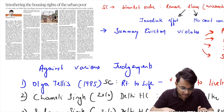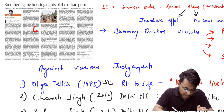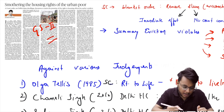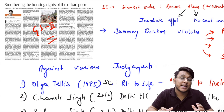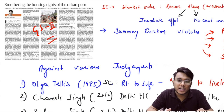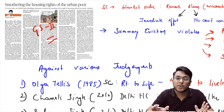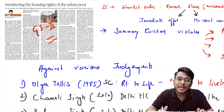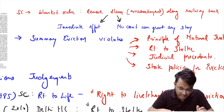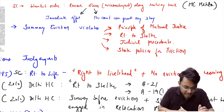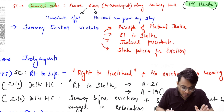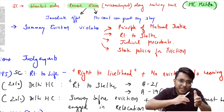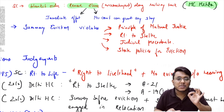The next editorial is highly important for GS Paper Number 2 — it covers a large number of Supreme Court judgments relevant to Article 21, right to shelter, and social justice. Background: the Supreme Court recently issued a blanket order under the MC Mehta case directing that all slums formed around railway tracks in Delhi are encroachments and need to be removed immediately — with no appeal allowed and no court permitted to grant a stay.